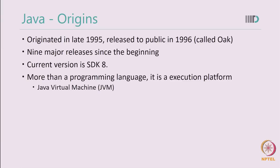Let us start with our first lecture on Java. Java originated in late 1995 and was released to the public in 1996. At that time it was called Oak. Since then there have been 9 major releases, and the current version is 8.